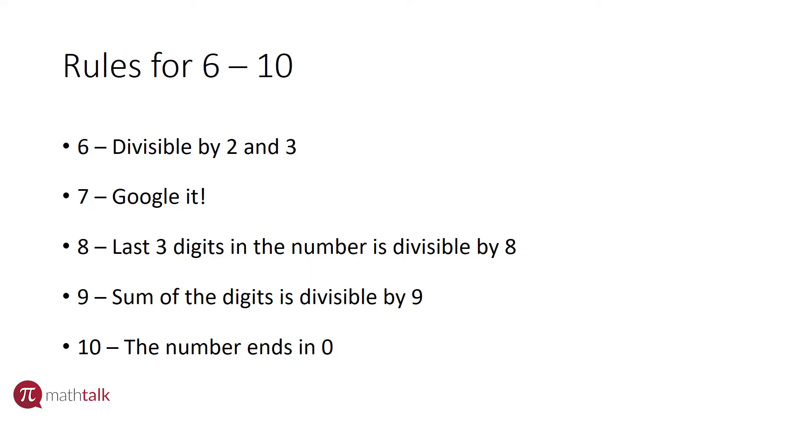And the rule for ten, in my opinion, is the easiest rule there is, because if your number ends in a zero, then your number is divisible by ten; otherwise it's not. So let's take a look at how to apply these rules for a couple examples.